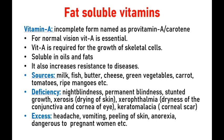Vitamin A deficiency also causes xerophthalmia — dryness of the conjunctiva and cornea of the eyes, where the eyes become dry and can ulcerate. Another condition is keratomalacia — corneal scarring — where damage inside the eye leads to vision problems. Excess Vitamin A causes headache, vomiting, peeling of skin, anorexia, and is dangerous to pregnant women. Therefore an adequate amount should be maintained in the body.